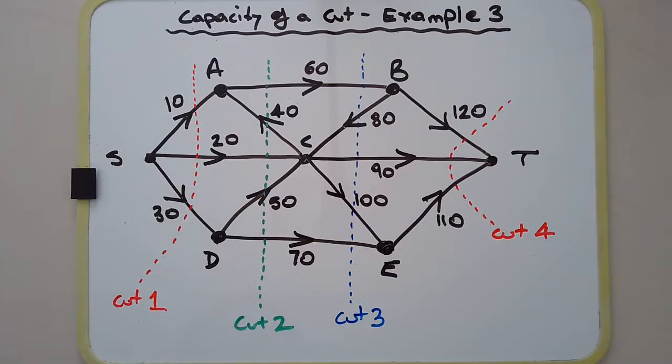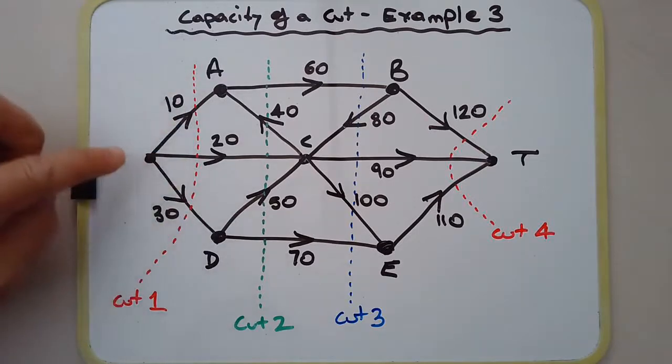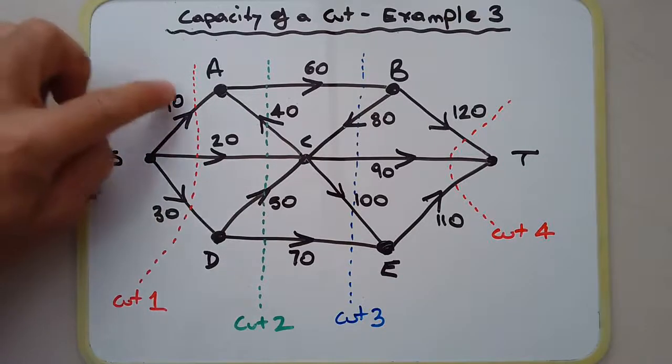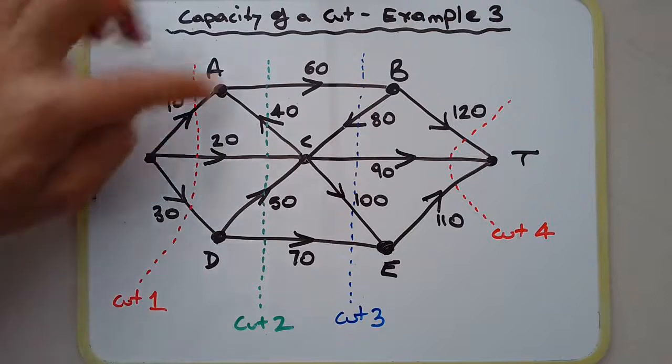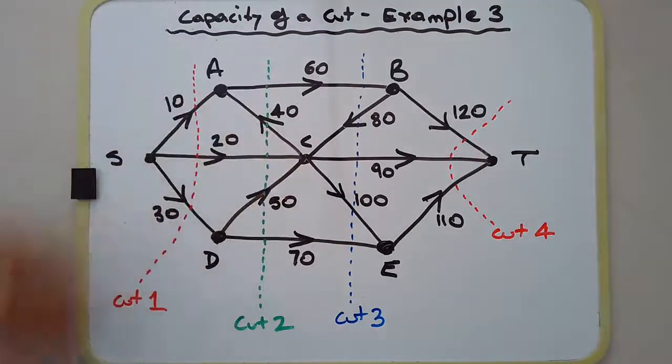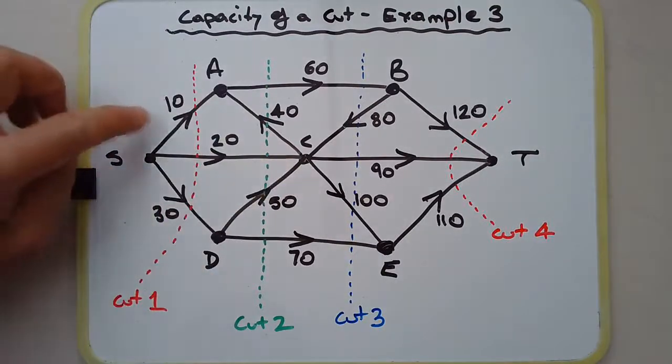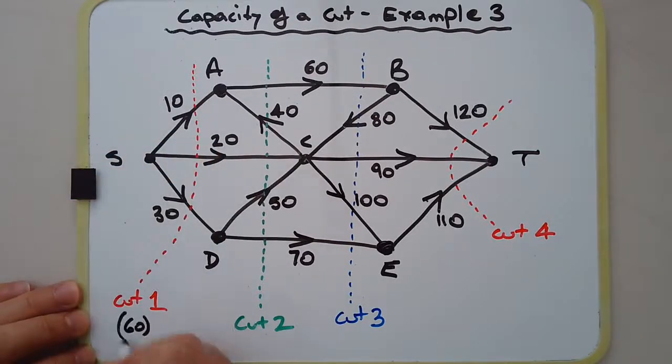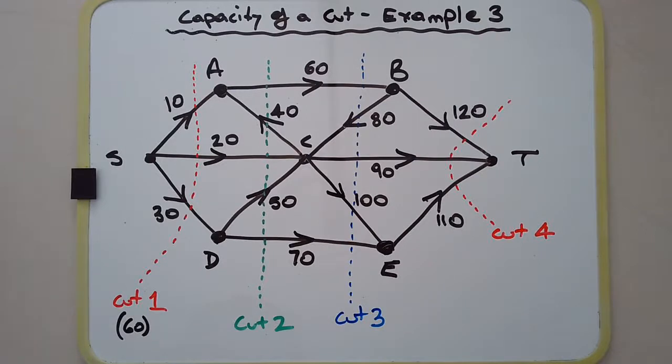What I'm going to do now is calculate the two simplest cuts first. Cut number one: all three edges are emanating from the source, so all three of these edges will need to be cut—SA, SC, and SD. So 10 plus 20 plus 30, that's going to be 60.